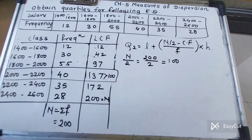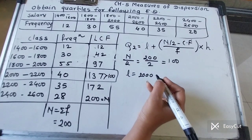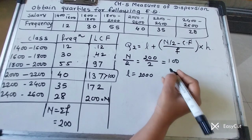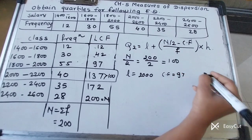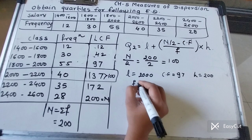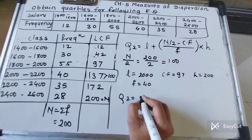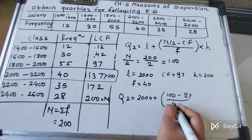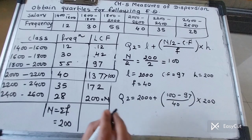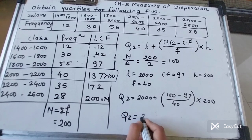From the Q2 class: L = 2000, N/2 = 100, cf = 97 (just preceding the Q2 class), f = 40, h = 200. Substituting into the formula: Q2 = 2000 + (100 − 97)/40 × 200. After calculation, Q2 = 2015.